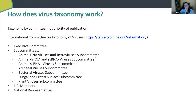Practically, how does virus taxonomy work? The taxonomy is done by committee, not by priority of publication. We have this international committee given the power by the International Union of Microbiological Societies to create a taxonomic framework. There's an executive committee that meets once a year, and then you have subcommittees with specific remits — animal DNA viruses and retroviruses, bacterial viruses, and others — that each reign over their specific part of the virus sphere.